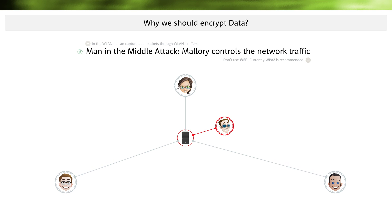If Malorie succeeds in doing that, he can control the connections between participants. Malorie could thus actively listen on Alice's communication. When Alice thinks she is communicating with Bob independently, in reality Malorie is controlling the messages. So if Malorie has taken control of a server, what can he do now?